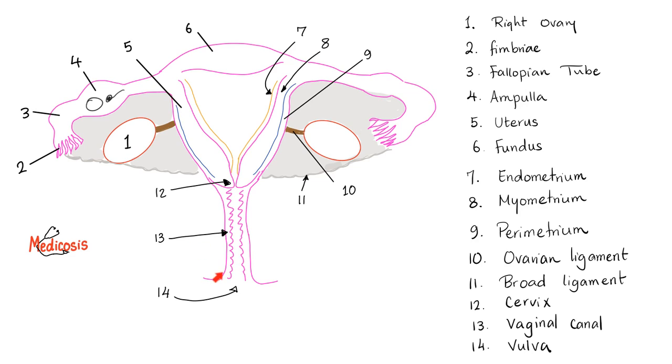Thirteen is the vaginal canal which opens into the vulva on the outside world. Why is the vaginal canal like zigzag, zigzag, zigzag to increase the surface area and to allow the vaginal canal to expand during childbirth?